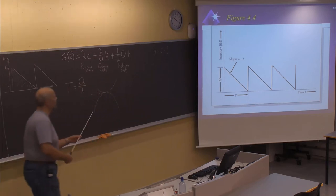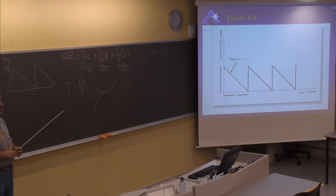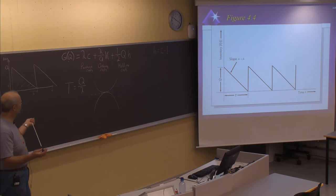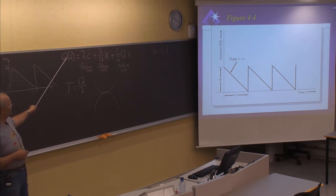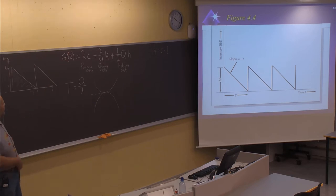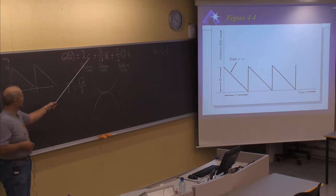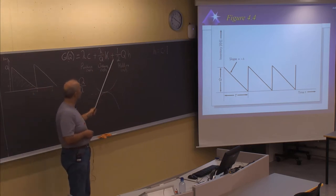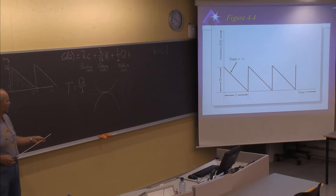We have now had a look at the cost function with what we call the relevant cost for determining the optimal inventory policy. We know that this G function, the cost function, is dependent on the variable Q, the order size. It will include the purchase cost, the ordering cost, and the holding cost — three parts of the cost function.